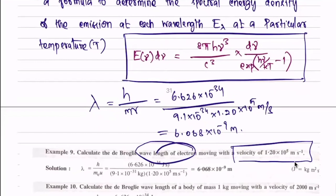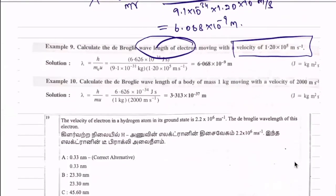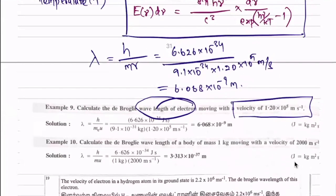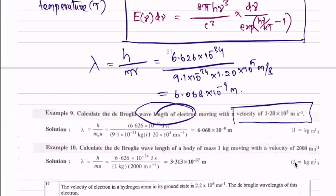Now we have to answer the question. The velocity of an electron in a hydrogen atom in its ground state is 2.2 × 10⁶ meters per second. Find the De Broglie wavelength of this electron.